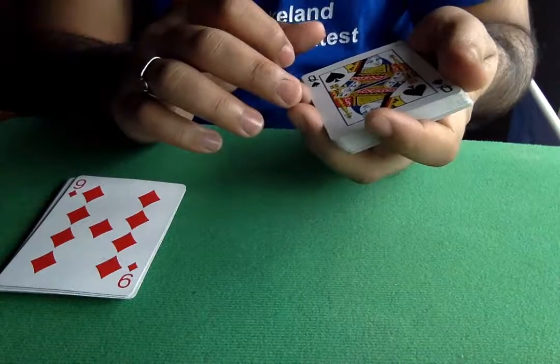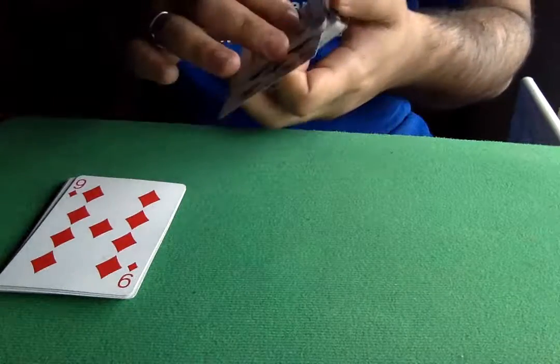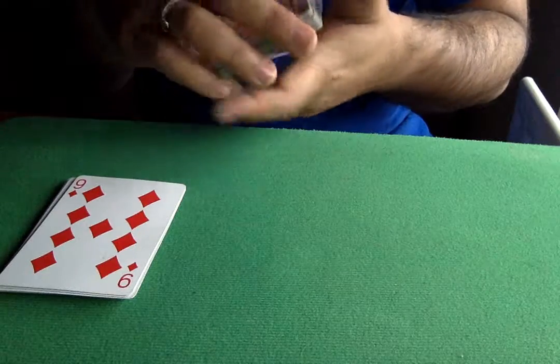After that, you get them to select a card. Let's say the eight of clubs. And you control it to the bottom of the deck.